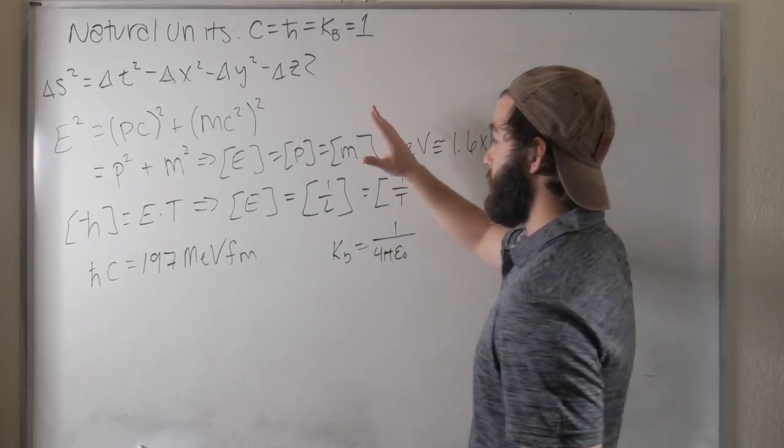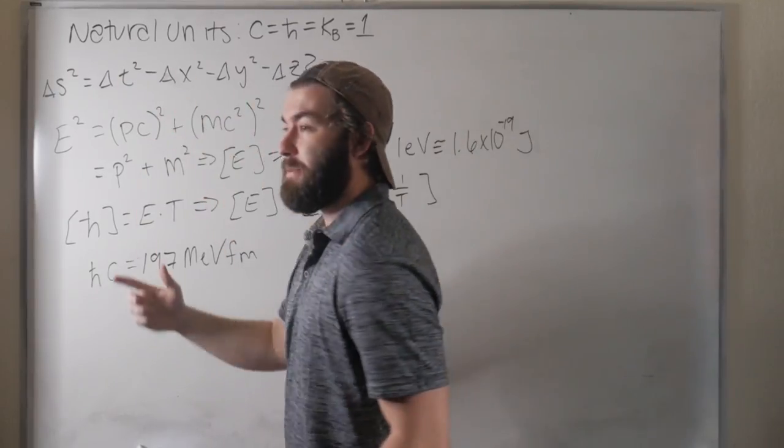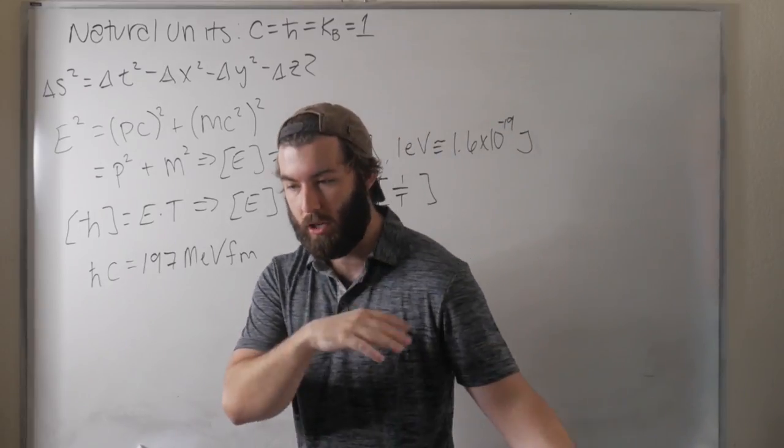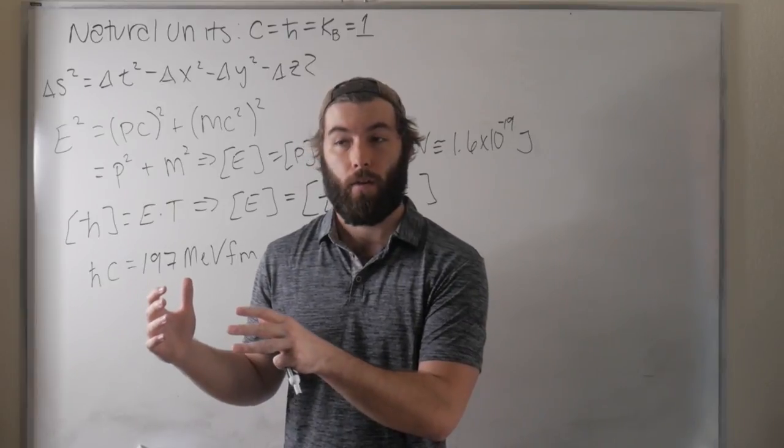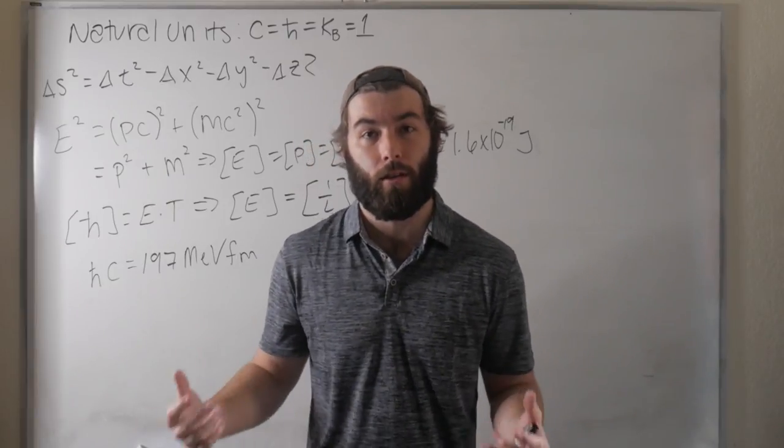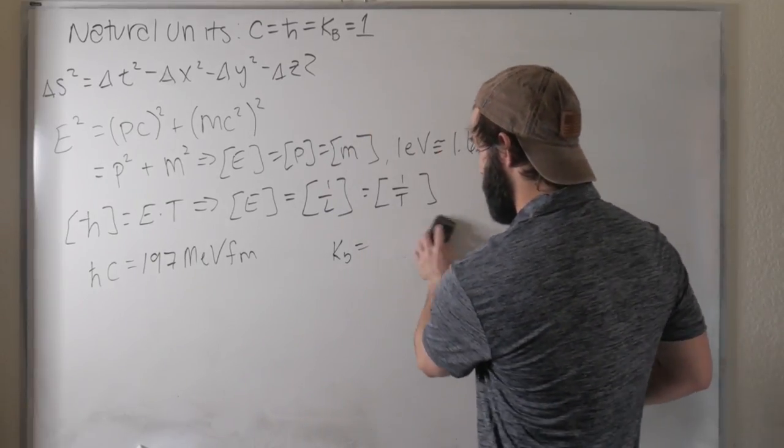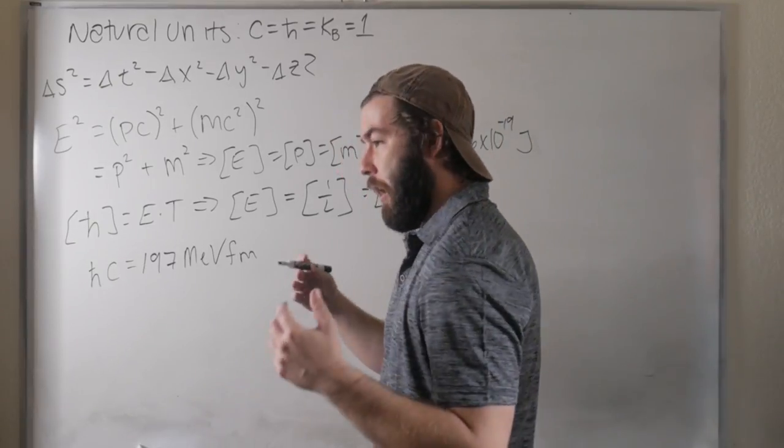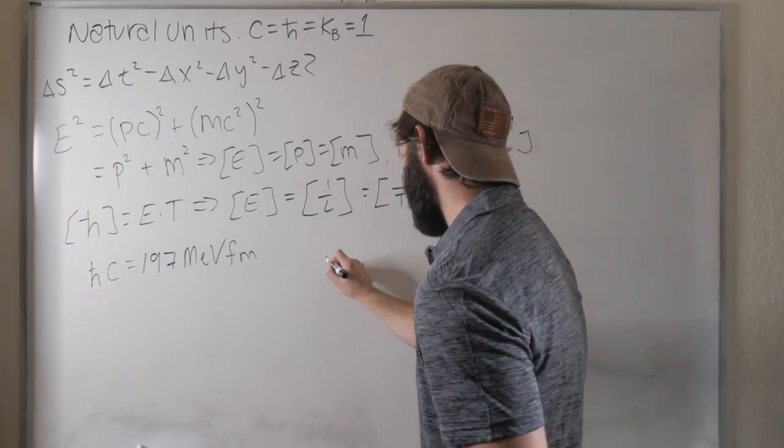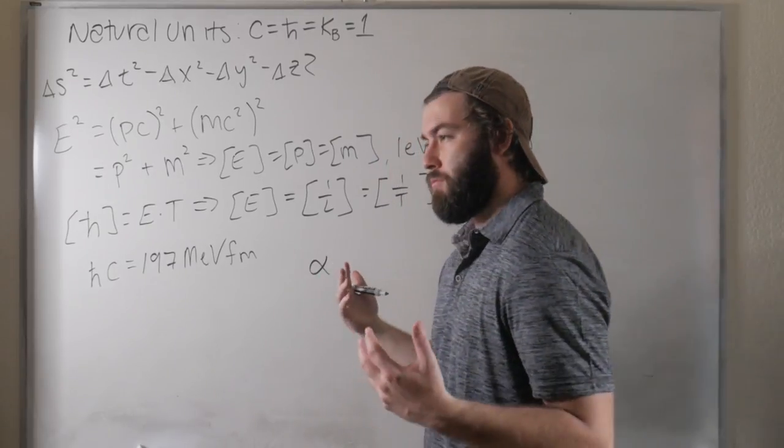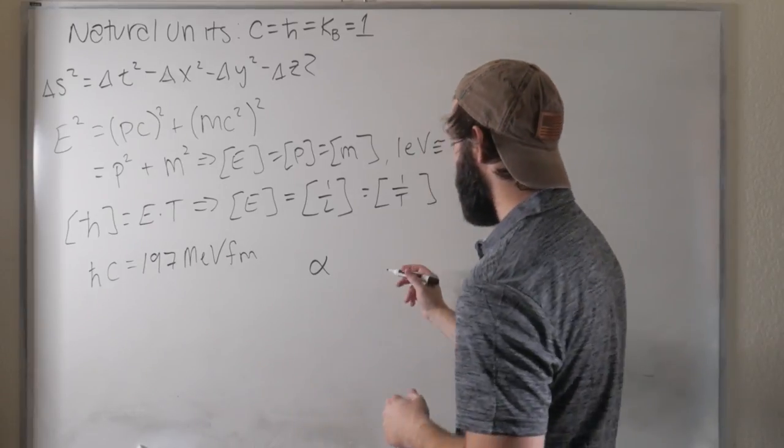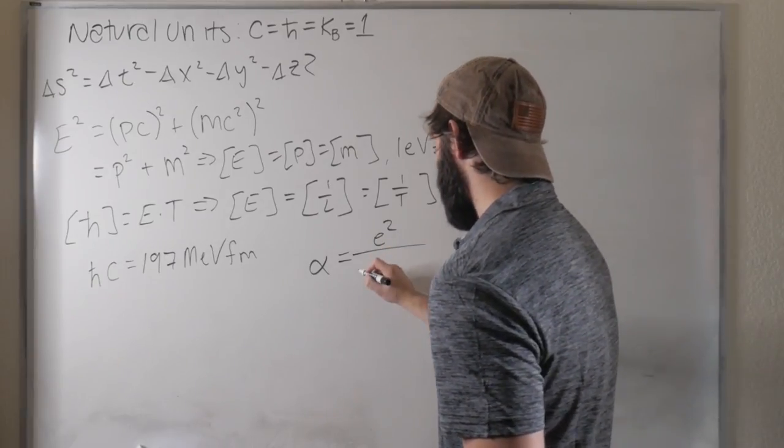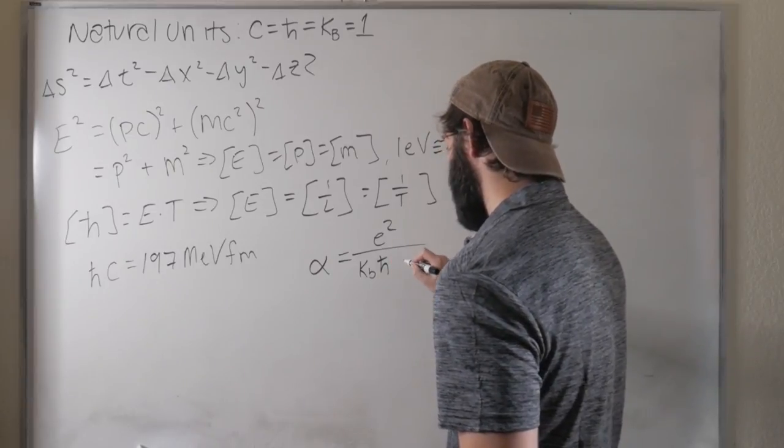But why am I talking about this at all? Well, the next question is, we were able to relate energy, momentum, mass, time, and space, all in terms of the electron volt. The last quantity that I'm kind of interested in is, how does shifting to these natural units affect the units of the electric charge? What is the natural unit of the electric charge under these assumed dimensionless quantities? So assuming k_B is also equal to one. Well, one way of doing it is to relate it to another dimensionless quantity that maybe you've heard about, known as the fine structure constant, alpha. Alpha characterizes the strength of the electromagnetic interaction between charged particles, and it is equal to the square of the charge of the electron divided by Boltzmann's constant times h-bar times the speed of light.